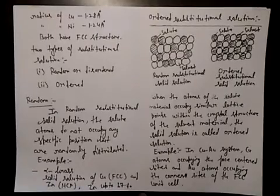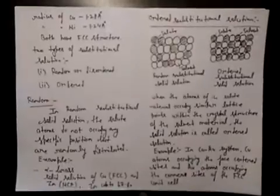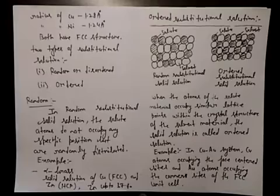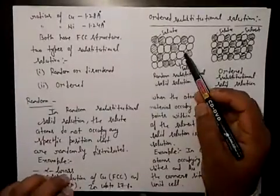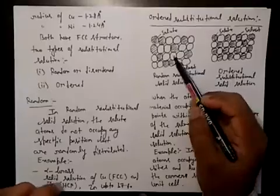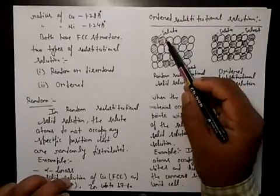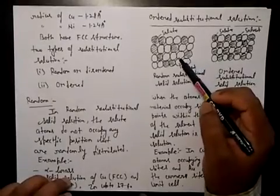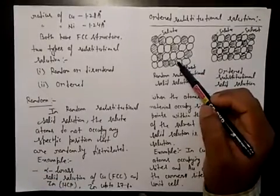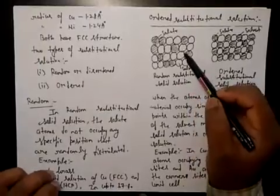Hello students, in the last video we discussed random substitution solid solution. Here you can see a crystal pattern, and you may notice that the solute has taken sites randomly. There is no pattern in this crystal structure. This is random substitution solution. Now we will discuss ordered substitution solid solution.